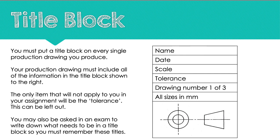Now, on every single production drawing that you produce, you need to include a title block. There are seven items that could be shown on a title block and they are to your right-hand side. We have name which would be your name. We have the date. We have the scale. We have tolerance. We have the drawing number. We have the phrase all sizes in millimetres. And then we have our third angle projection symbol.